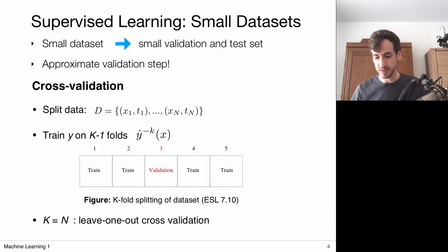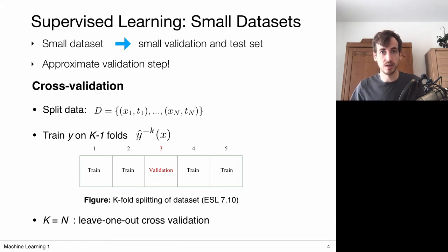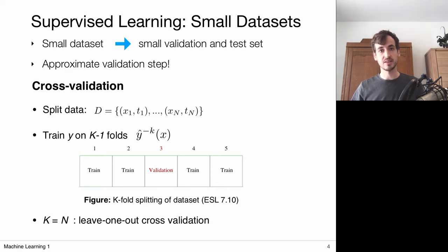If you only have a very small dataset, your validation and test sets consist of very few data points, giving a very noisy estimate of the error. You could be unlucky and sample outliers, giving the impression your model is doing a poor job, or sample easy points giving the impression of a very good model. To increase the effective validation set size, we're going to use a trick called cross-validation.